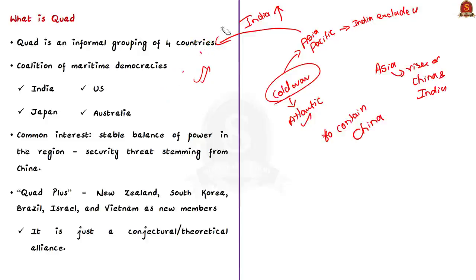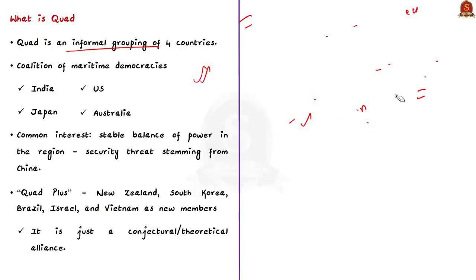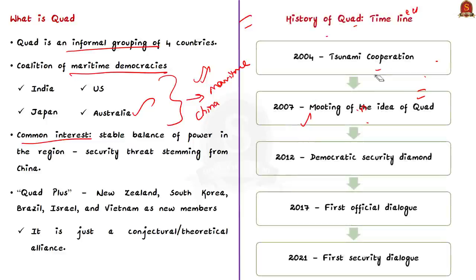Now let us move on to Quad. Quad is an informal grouping of four countries — India, Japan, United States, and Australia. It is a coalition of maritime democracies with a common interest of maintaining a stable balance of power in the Indo-Pacific region, seen in the context of rising security threats from China. The history of Quad goes back to 2007, when Japanese Prime Minister Shinzo Abe put forth the idea based on 2004 tsunami collaboration between these countries.